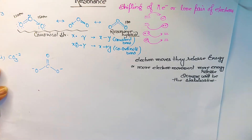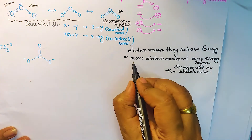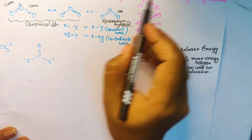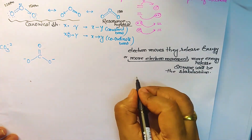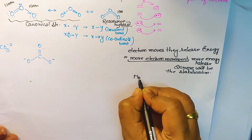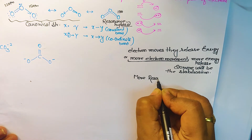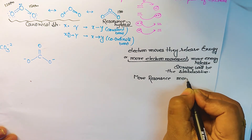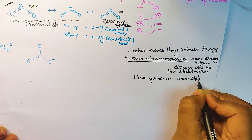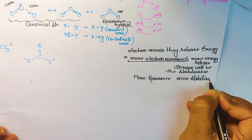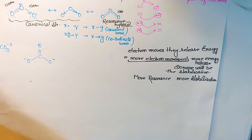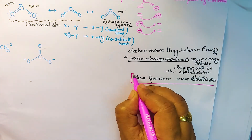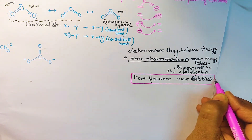This electron movement is known as resonance. So we conclude: more resonance leads to more stabilization. From this we get the important fact that a molecule with more resonating structures will be more stable.